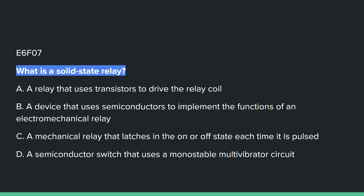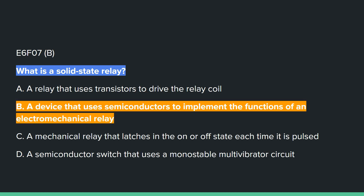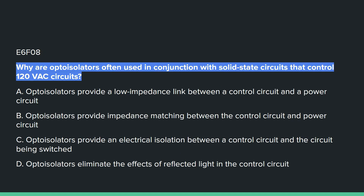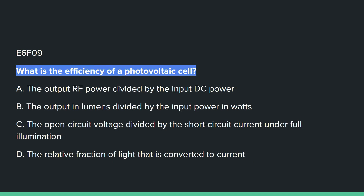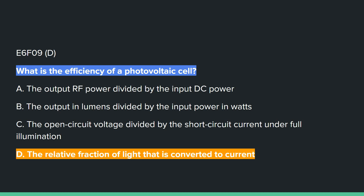E6F07: What is a solid state relay? B, a device that uses semiconductors to implement the functions of an electromechanical relay. E6F08: Why are optoisolators often used in conjunction with solid state circuits that control 120 volt AC circuits? C, optoisolators provide electrical isolation between a control circuit and the circuit being switched. E6F09: What is the efficiency of a photovoltaic cell? D, the relative fraction of light that is converted to current.